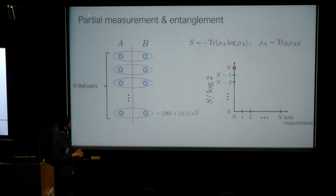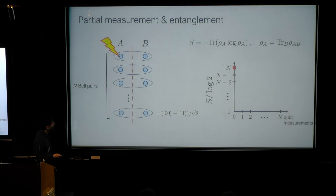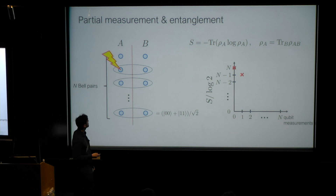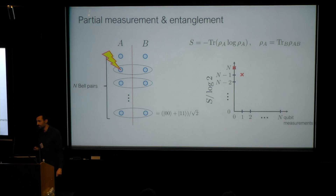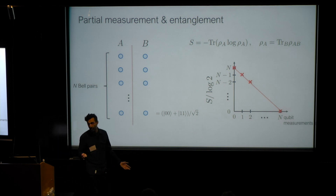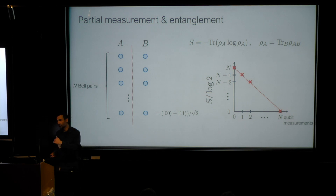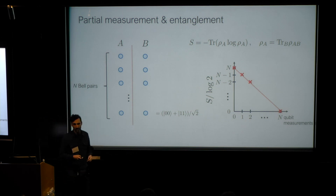Now suppose I start measuring subsystem A. I measure the first qubit — the first bell pair collapses, and I will lose one bit of entanglement. I measure the second bell pair's qubit in subsystem A, I lose another bit, and so on and so forth, until I have no more entanglement entropy left. So this is a volume law state. I measure the qubits one by one, track the entanglement entropy, and find a simple linear function describing the evolution of the entanglement.